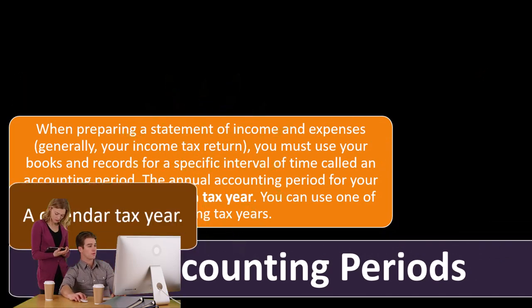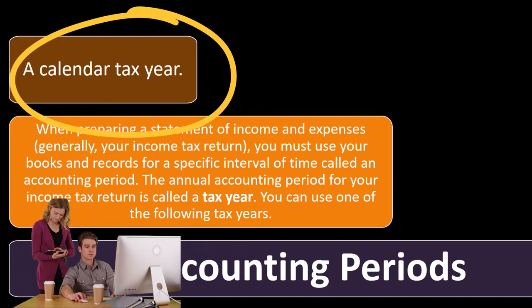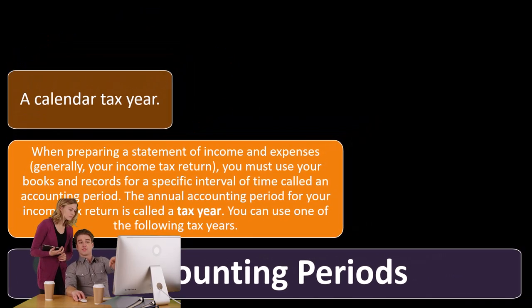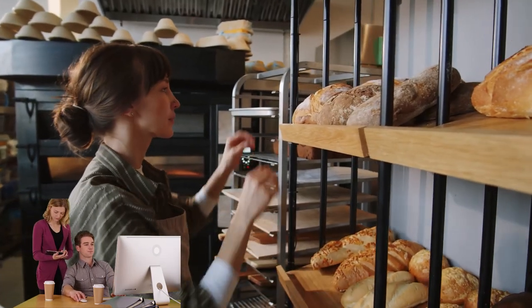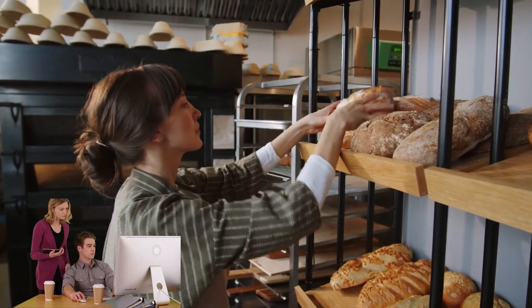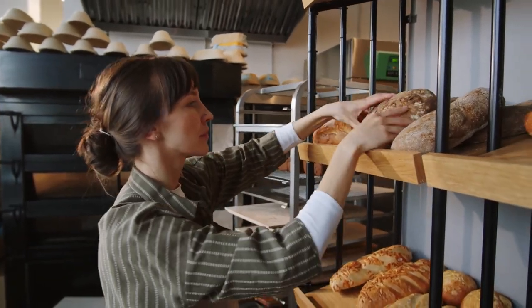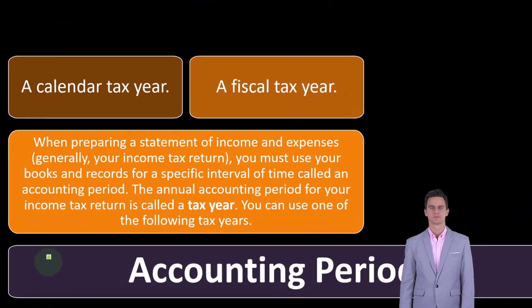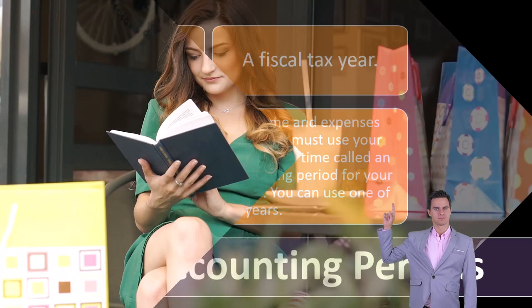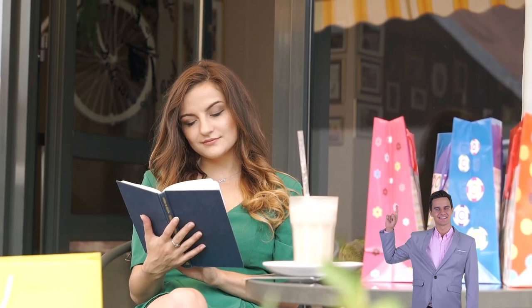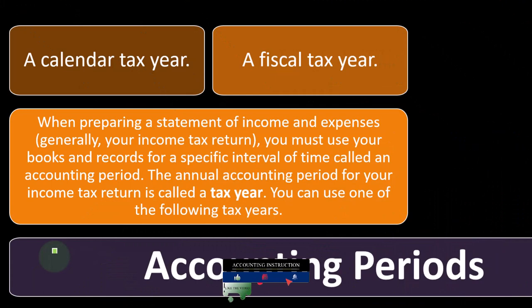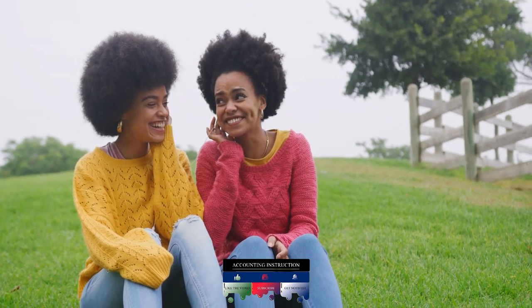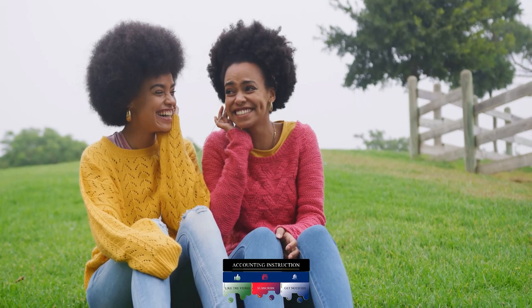You can use one of the following tax years: a calendar tax year or a fiscal tax year. Obviously, if you are a Schedule C type of business, most people are probably on a calendar tax year because they're going to be reporting it with their Form 1040. You might think these two terms sound quite similar in nature, and if your fiscal year is the calendar year, they are basically the same. But you might have a situation where a fiscal year is different than the calendar year.